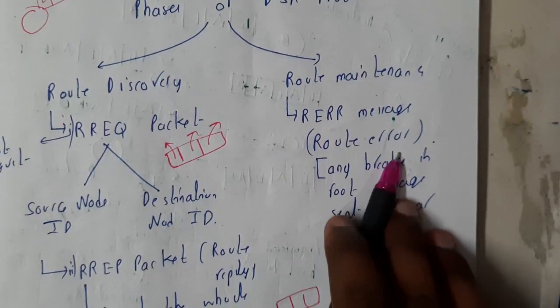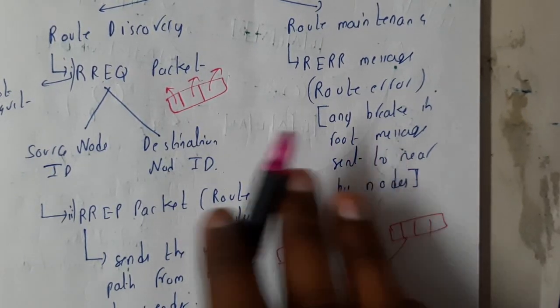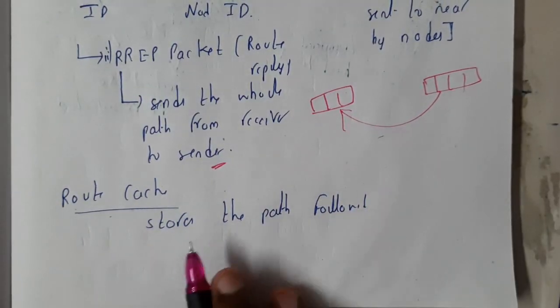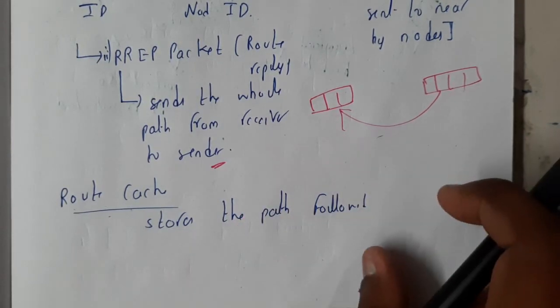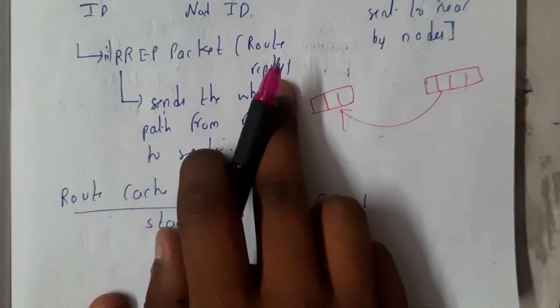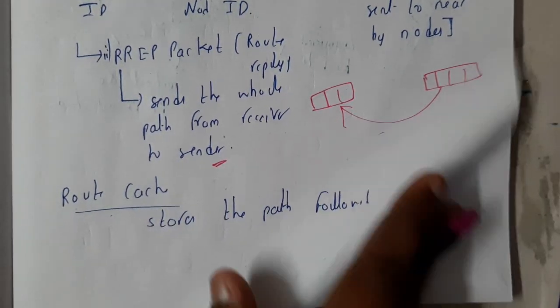For maintenance, we are having route error. If any break occurs, we will be avoiding that route and we will be moving back and continuing with the new route. And we will be having a route cache. Route cache is nothing but it stores the path which we are following. This is what helps us to find the route reply. We will be sending back, so that data is stored in this route cache.